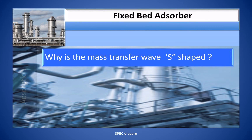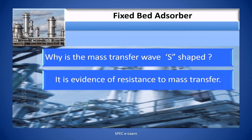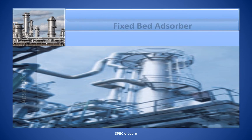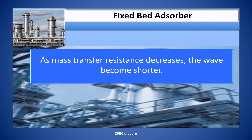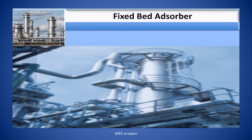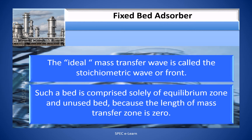Why is the mass transfer wave S-shaped? It is evidence of resistance to mass transfer. The greater the resistance, the longer the wave. As mass transfer resistance decreases, the wave becomes shorter. In the ultimate ideal case, the curve becomes a vertical straight line, or zero length. This ideal mass transfer wave is called a stoichiometric wave or front. Such a bed is comprised solely of equilibrium zone and unused bed because the length of the mass transfer zone is zero.